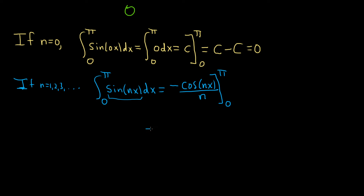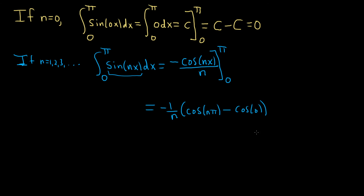Now we plug in pi. This gives us negative 1 over n times cosine of n pi minus cosine of 0. Cosine of n pi is negative 1 to the n, and cosine of 0 is 1, so this is negative 1 over n times the quantity negative 1 to the n minus 1.